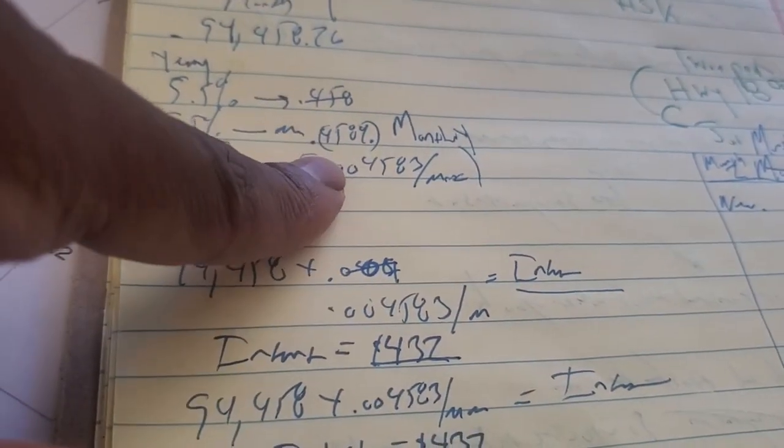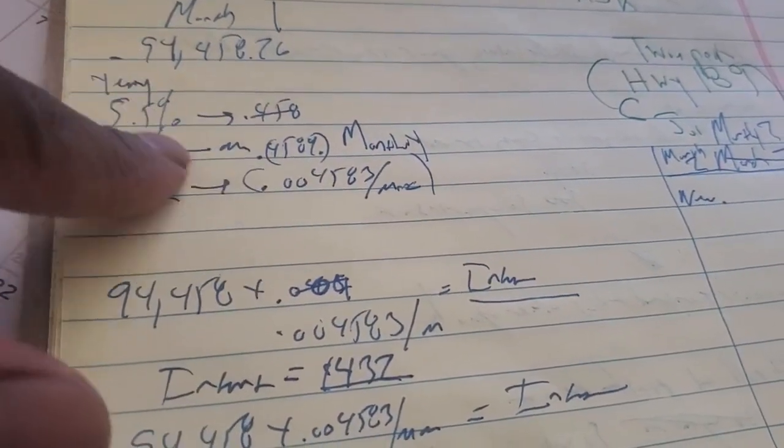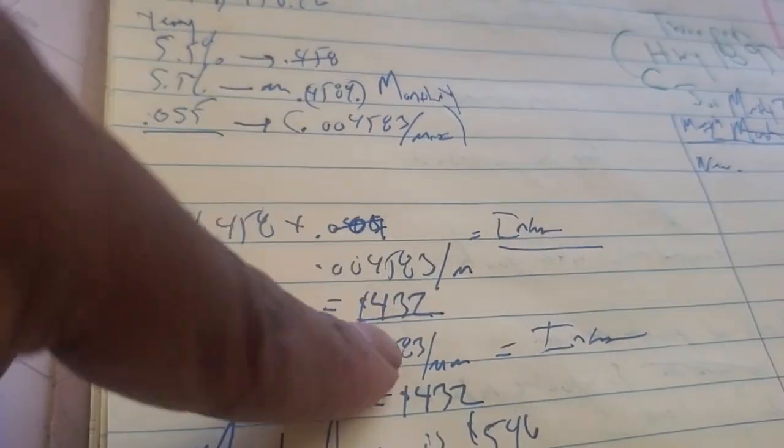Now you take your monthly interest and you multiply it by your current balance. And that gave me an interest, just on this with no payments, of $432.